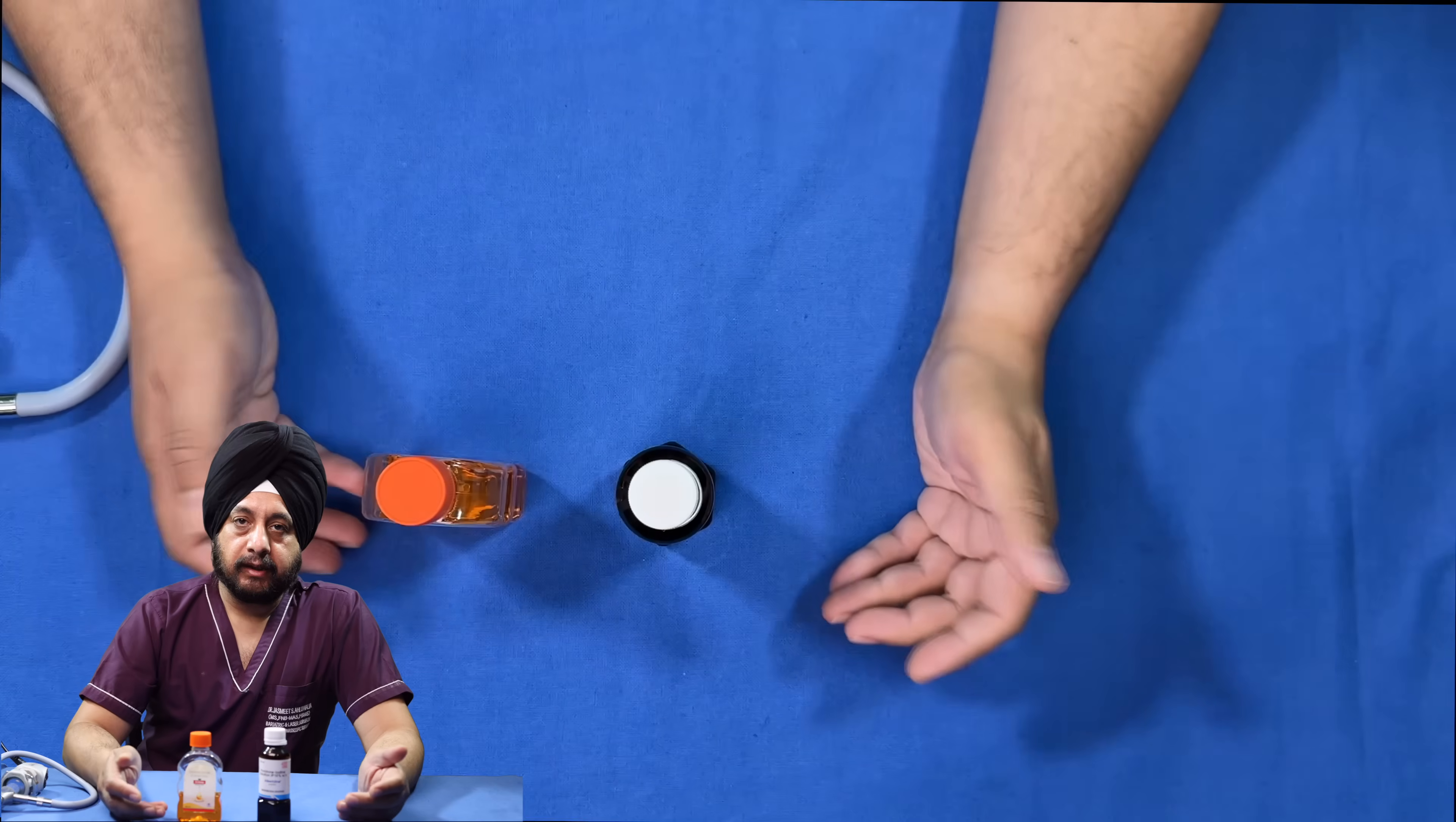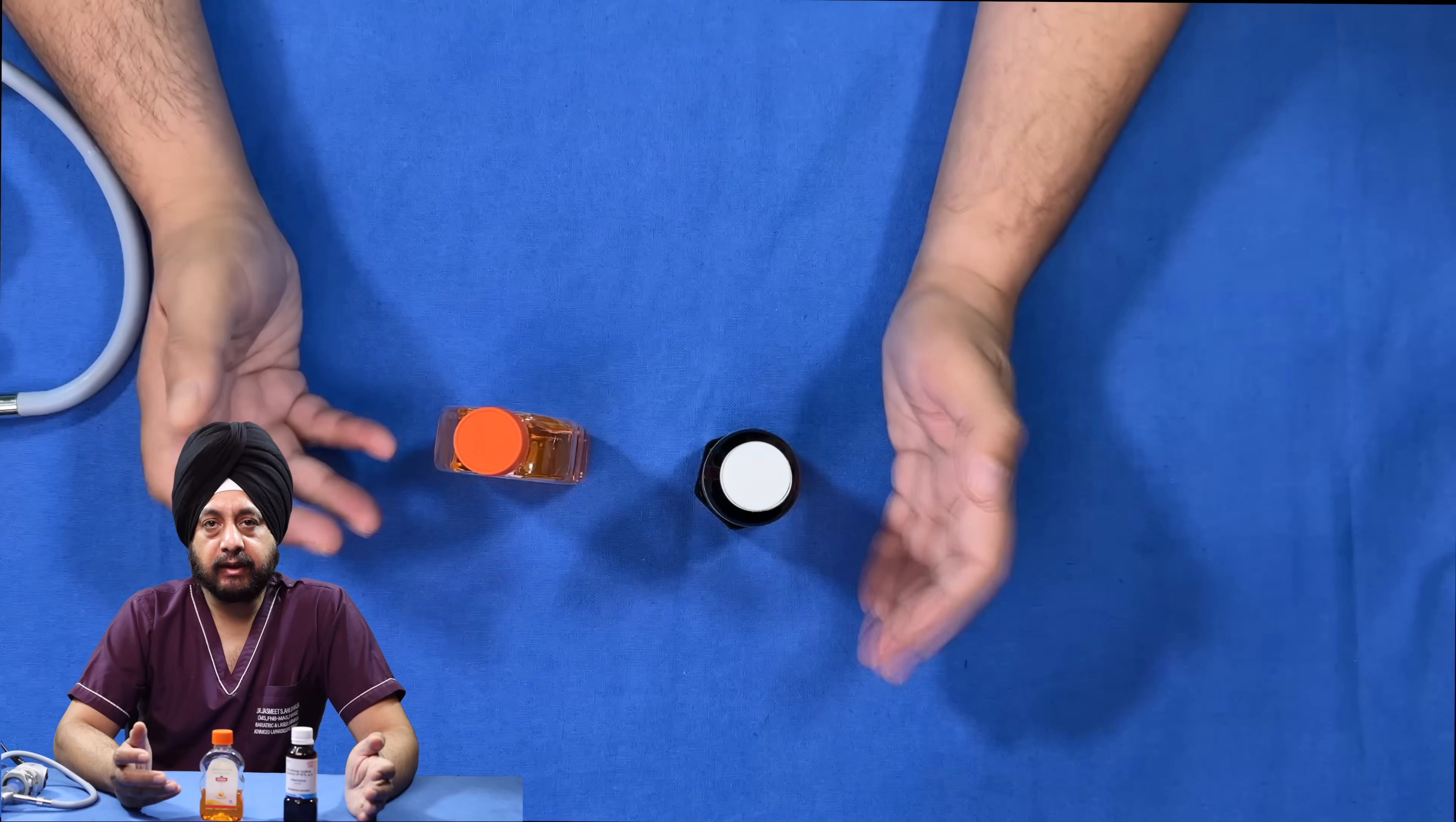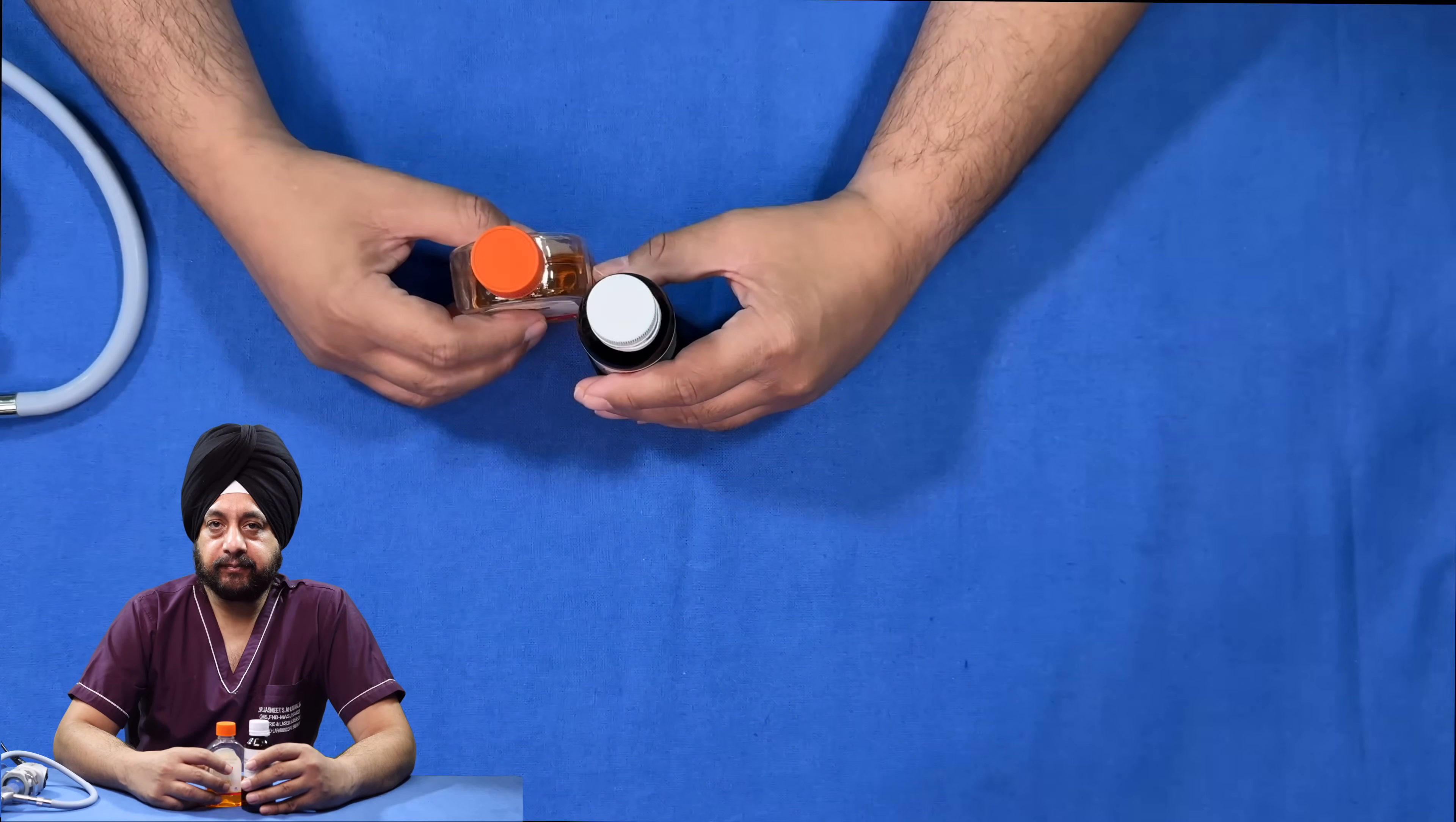Apart from that, you can use Savlon or povidone iodine. Just wet your pad and with a gentle swipe, you can make the tip of your scope wet. First clean it, then just make it a little wet so it does not fog when you go inside. There are also certain anti-fog solutions available with various manufacturers which can be used. Thank you.